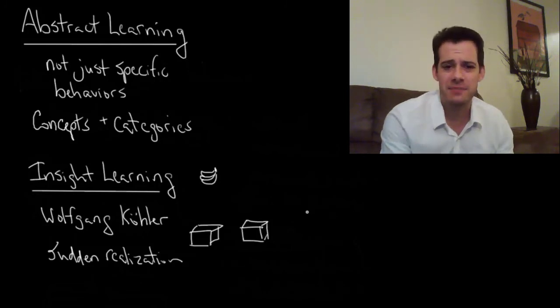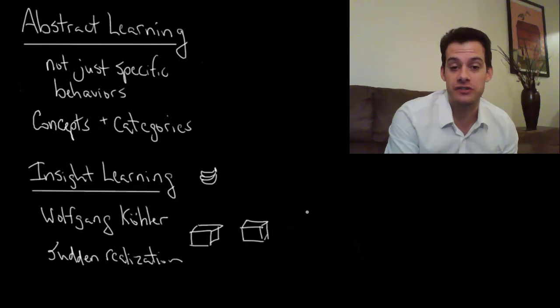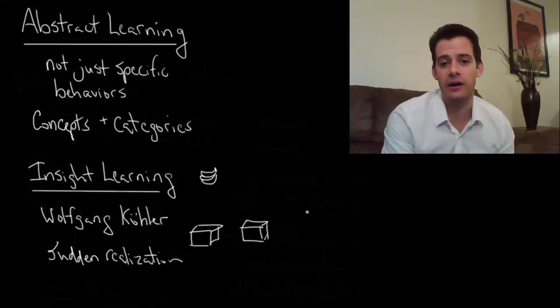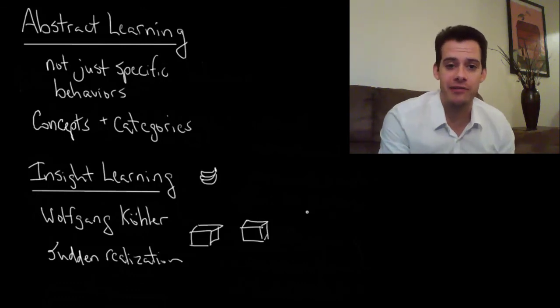These types of learning, in addition to the biological constraints that we discussed earlier, showed the cracks in the foundation of this behaviorist approach to understanding learning. It shows that there's other types of learning and they don't rely on observable behavior. They don't necessarily rely on particular types of reinforcement. And so the tide shifted away from behaviorism to other approaches in psychology.